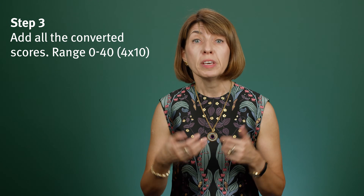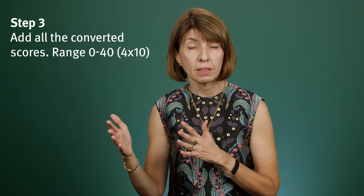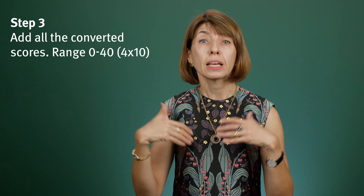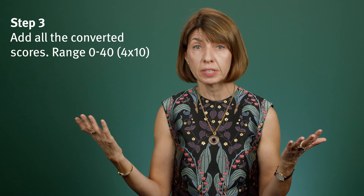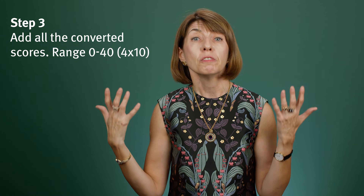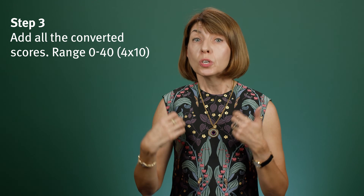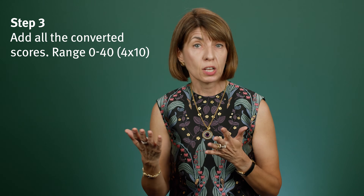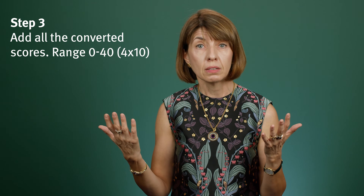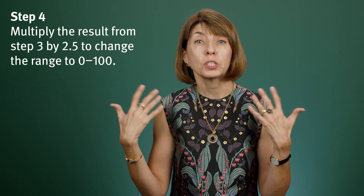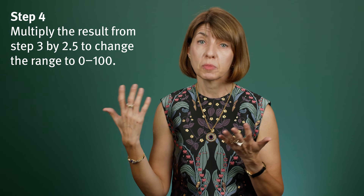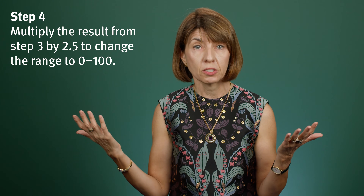For each question, you now have a score from 0 to 4. With 10 questions, your range of scores will be from 0 to 40. But people usually like ranges from 0 to 100, as these remind them of percentages. So to convert a 0-to-40 range into a 0-to-100 range, you simply multiply by 2.5, because 2.5 times 40 equals 100.